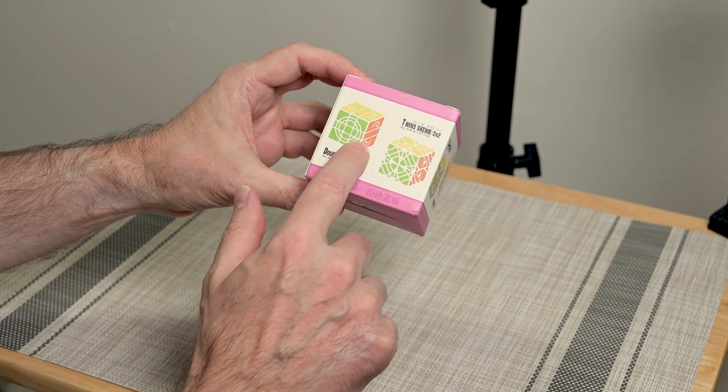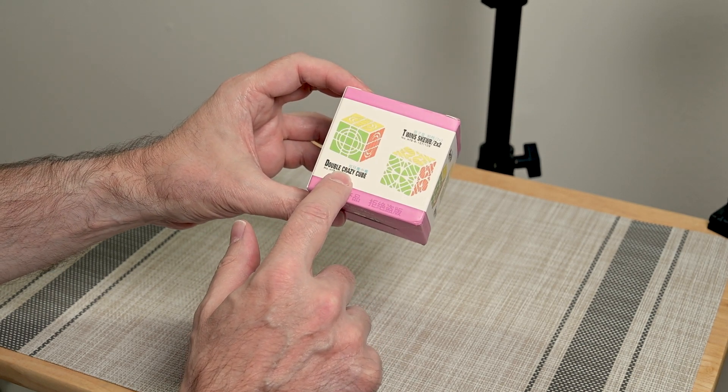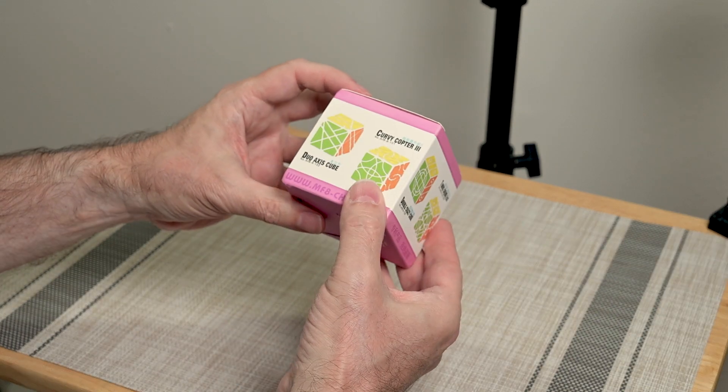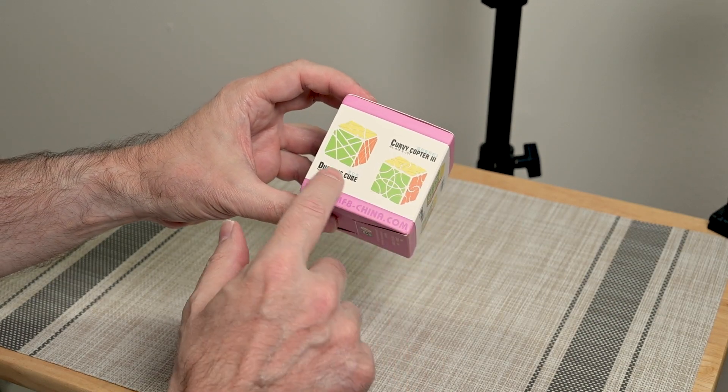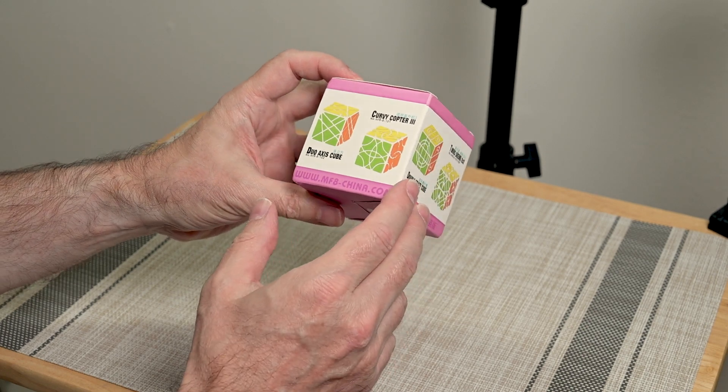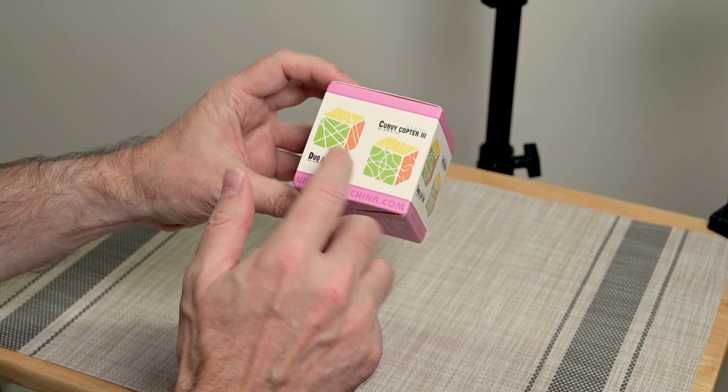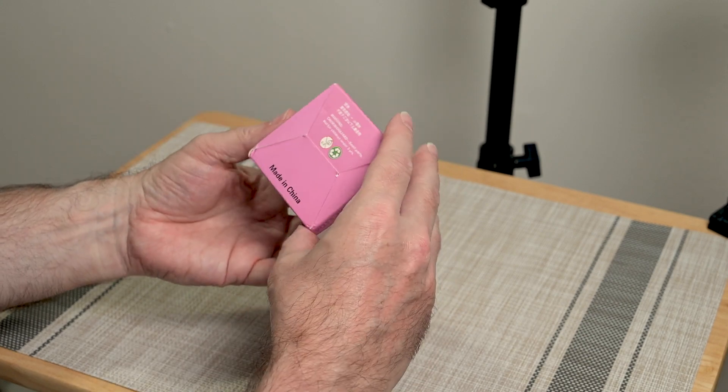Hmm, I might need to look at that one. Oh, this is the one we're going for, Double Crazy Cube. That's the one I ordered. And Kirby Copter 3, which I already have. And the Duo Axis Cube. I'm not a big Axis. Well, I guess the Axis is probably okay. I'm not a big Ghost Cube, though. It looks a little too much like a Ghost Cube for me.